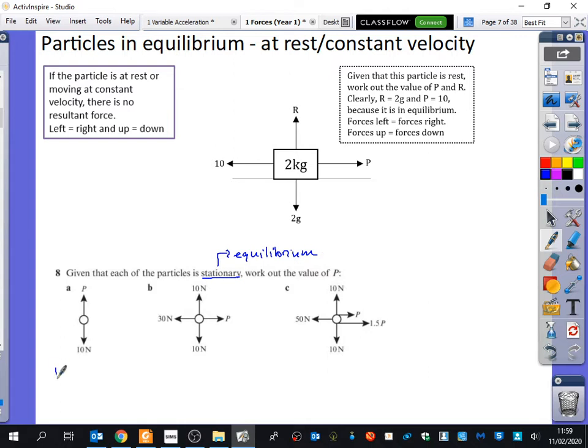Okay, well, how fascinating is this? The value of P is 10. Of course, the value of P is 10 because it's stationary. Everything is balanced. The value of P in this one is 30 because those ones are balanced. Notice also that the up and down are also balanced to each other.